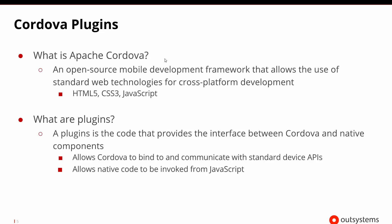So what is Apache Cordova? It's an open source mobile development framework that allows the use of standard web technologies for cross-platform development. By using HTML5, CSS3, and JavaScript it has the ability of generating the code necessary for the native platform. Given that type of information, which is standard web stuff, you would be able to use the framework and generate the X code for Apple or the Android and Java code that you might need.